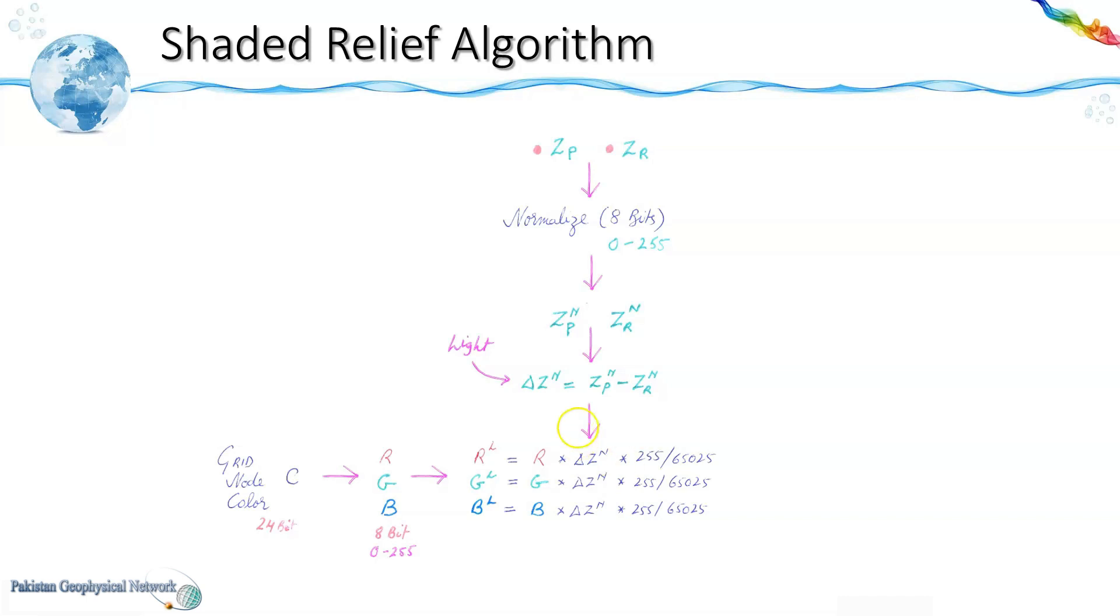And after that this rl, gl and bl that is the shaded relief applied versions would be again converted back to their composite color which is the cl. L indicates that shaded relief effect has been applied.